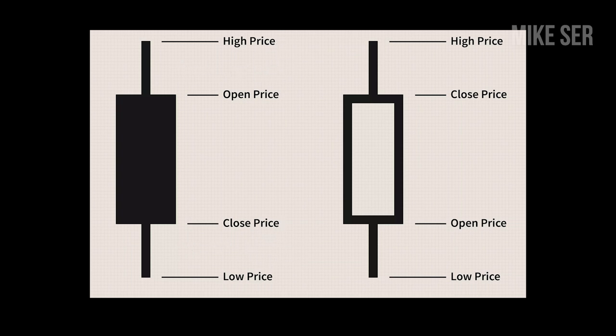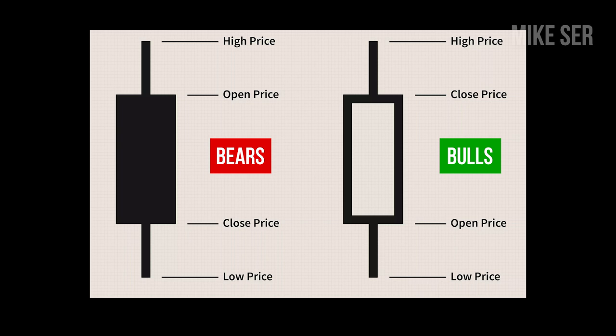If the close price is higher than the open price, then the color of the candlestick is typically white or green depending on your charting software, meaning that buyers are in control. However, if the close price is lower than the open price, then the color is typically black or red, meaning that sellers are in control. Each candle is an individual battle fought between the buyers — the bulls — and the sellers — the bears. The biggest benefit in utilizing candlestick charts is knowing who is in control in each candle.